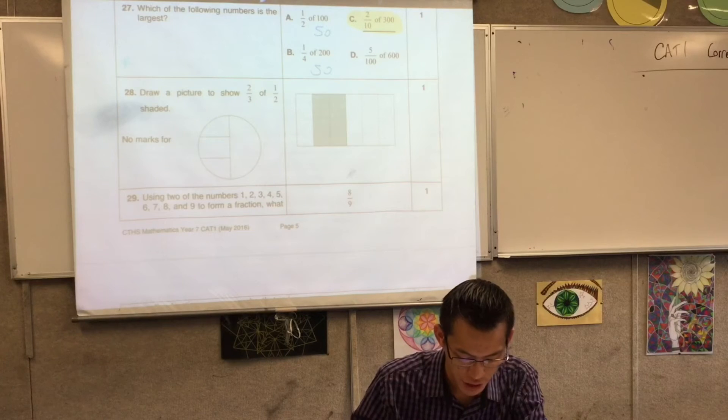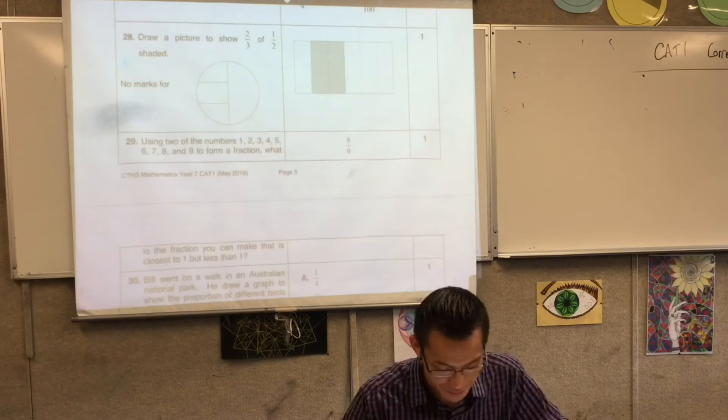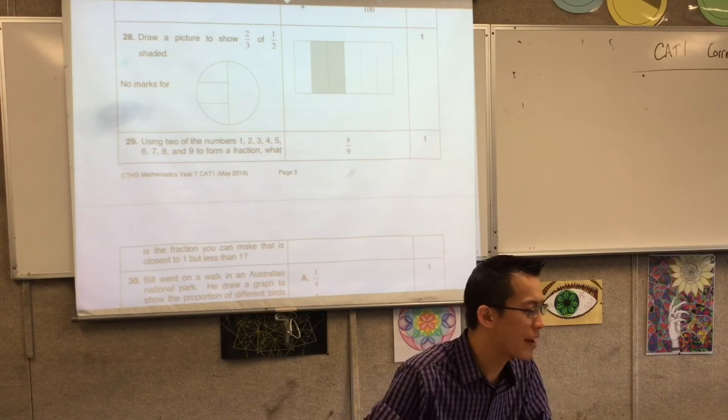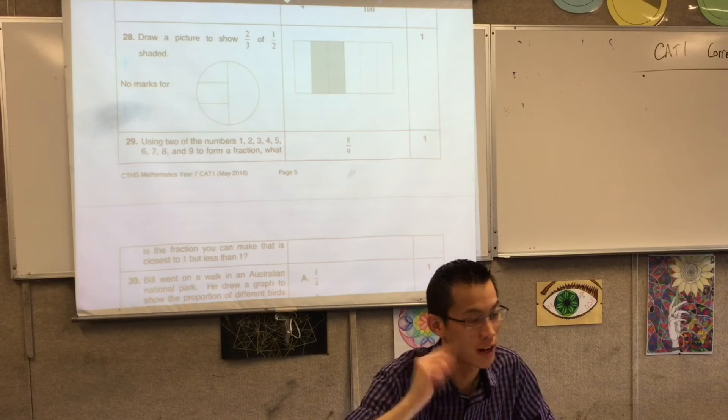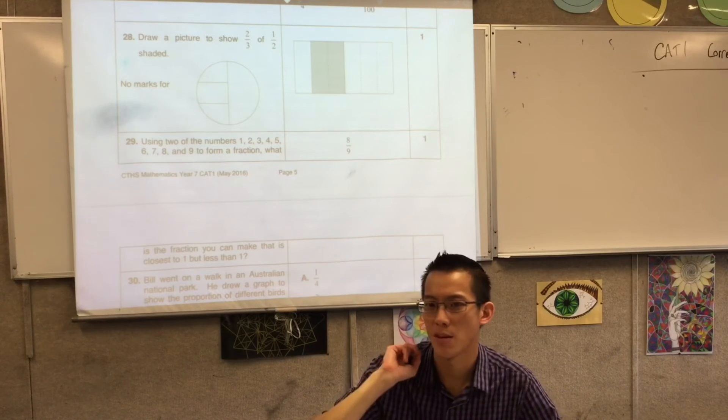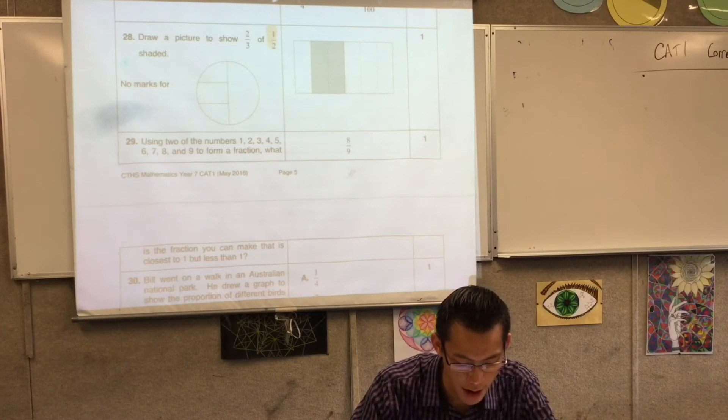Draw a picture to show two-thirds of half shaded. There are lots of ways to get this one right, and I see lots of answers around that are different to this one which got a tick. Can you see the way it was approached? I would have thought about it as, okay, just look at two-thirds of a half. Let's get a half first.